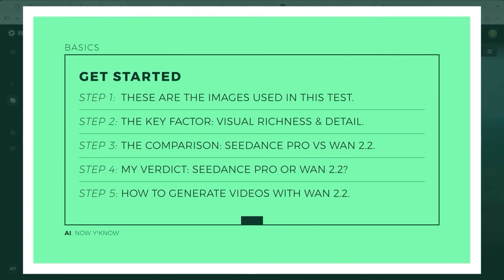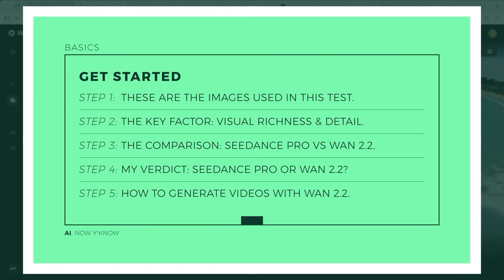Step 1: the images used in this test. Step 2: the key factor — visual richness and detail. Step 3: the comparison — C-Dance Pro vs One 2.2. Step 4: my verdict — C-Dance Pro or One 2.2. Step 5: how to generate videos with One 2.2.